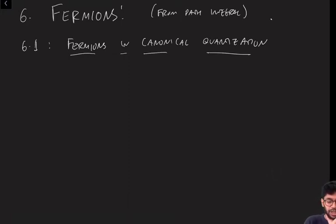As we're going to see this is going to require us to introduce an entirely new kind of number, but we'll get there in the next video. First, fermions in canonical quantization. So I'm going to only talk about Dirac fermions. So let me remind you what a Dirac fermion is.